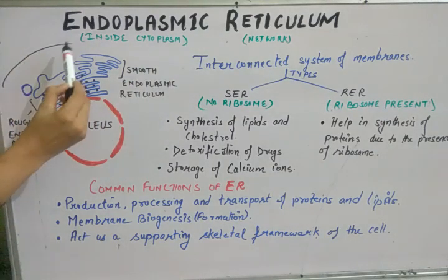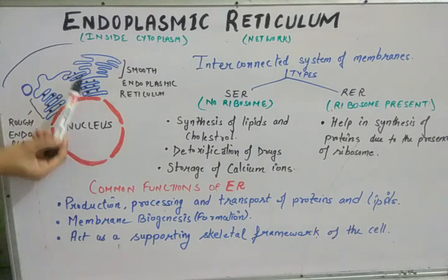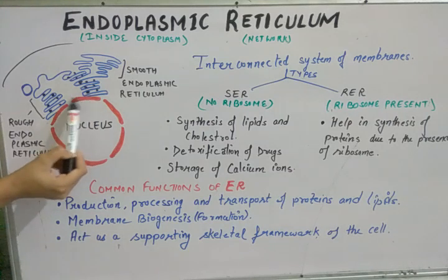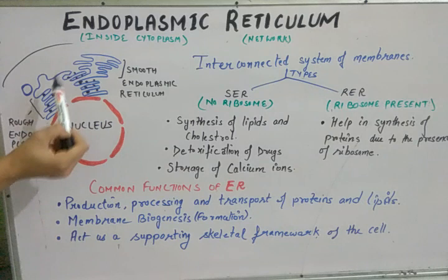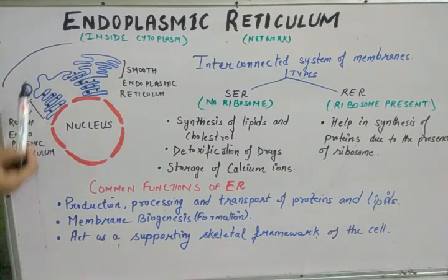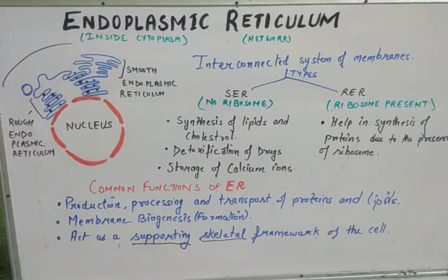This is the cell, and inside the cell is the cytoplasm containing the nucleus and the endoplasmic reticulum. We show the nucleus because the outermost membrane of the nucleus — the outer nuclear membrane — has the endoplasmic reticulum attached to it. It extends all the way to the plasma membrane, helping provide a supporting skeletal framework throughout the cytoplasm.